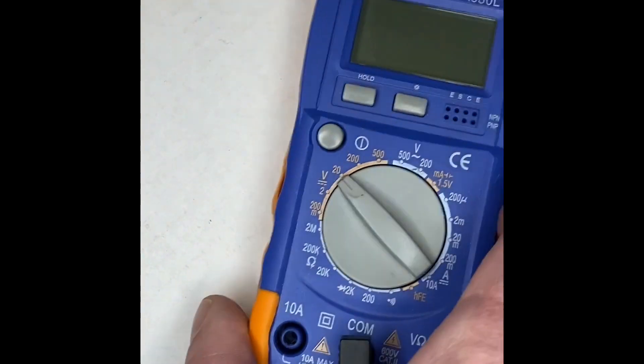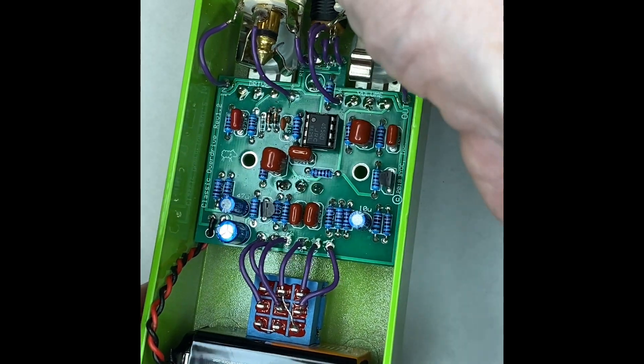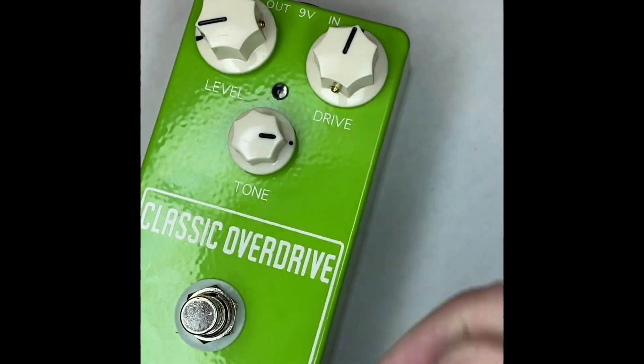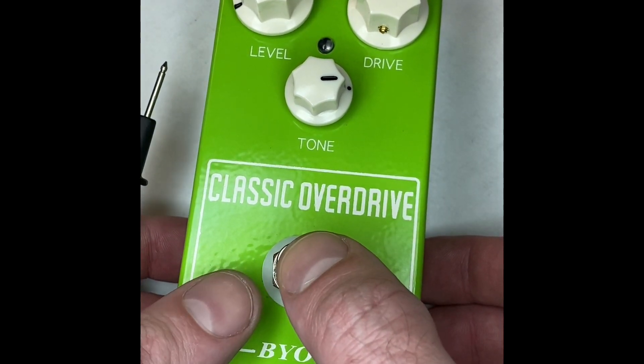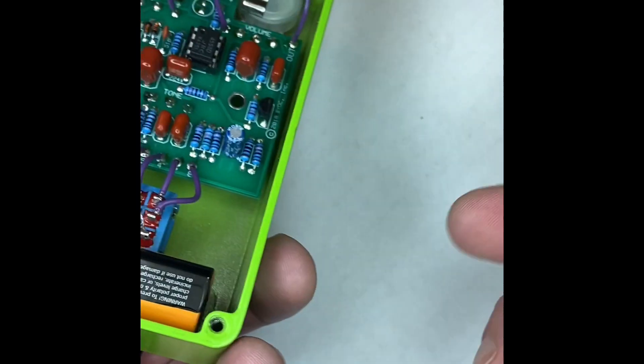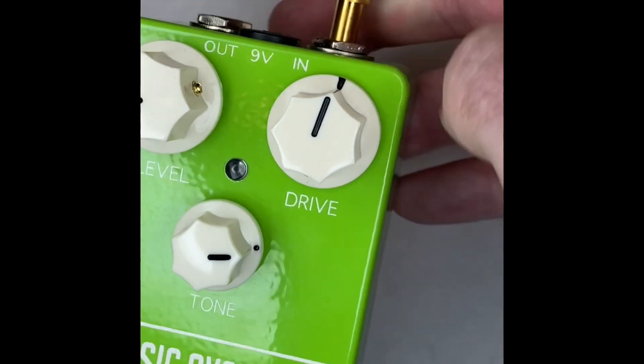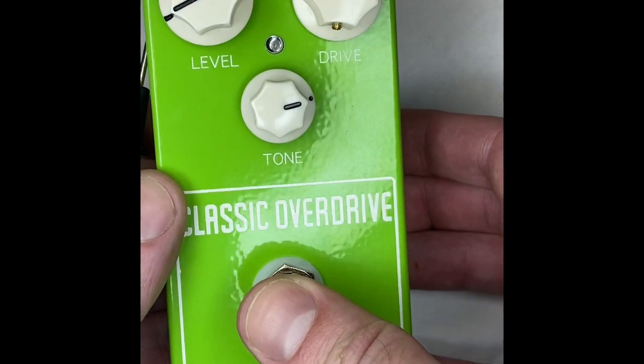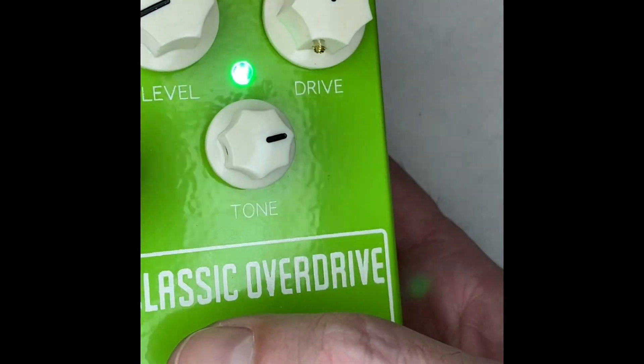So the next thing we're going to do is we're going to get a pedal. Before you can measure voltages, you have to make sure that you have a plug in the input, because your footswitch is a bypass switch, it's not an on-off switch. So I've got a battery in there—should be a fresh battery—and it doesn't turn anything on and off until I plug that plug in there.